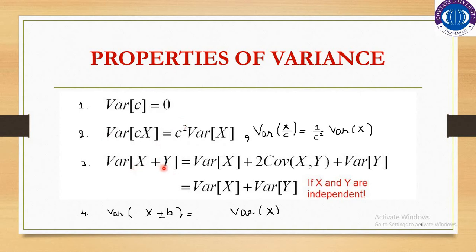Now suppose x and y are two variables. Then the variance of x plus y will be equal to the variance of x plus the variance of y plus 2 times the covariance of x and y. Covariance means the combined variability in both variables — that is, co-variation.